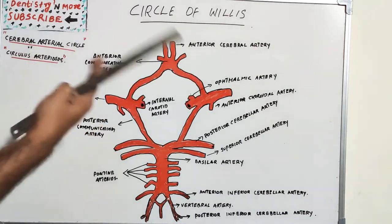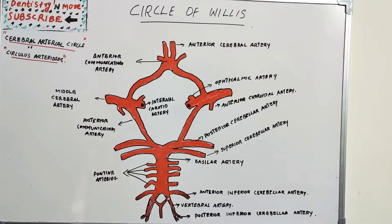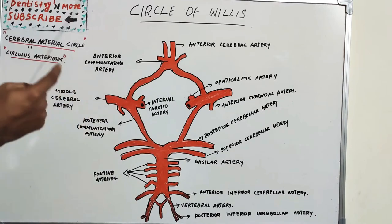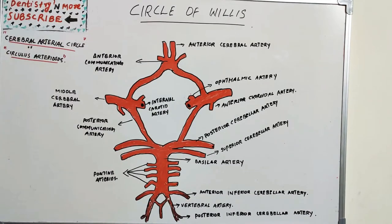This circle protects the brain from ischemia and stroke in cases of vascular obstruction or damage. The Circle of Willis is named after the English physician Thomas Willis. It allows blood to flow across the midline of the brain if an artery on one side is occluded, thereby serving a safety valve function — allowing collateral circulation through an alternate route if flow is reduced in one area.